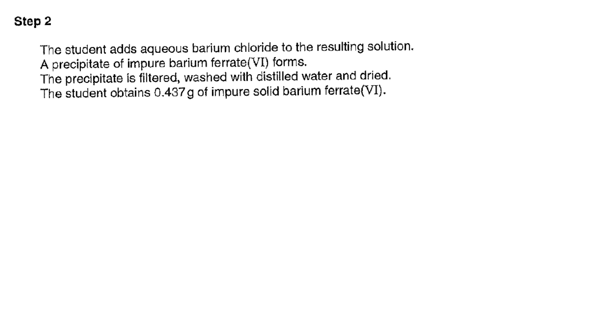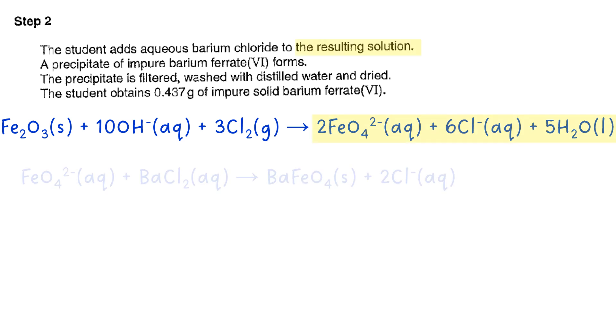So now we can go on to step two and think about what's happening here. So putting our equation down from before, the resulting solution is obviously the products. Now why have I ignored 6Cl- and 5H2O? Well the H2O ends up in the solvent and the 6Cl- is already there. So it's not actually being made in this reaction. It's just kind of floating around in the background. So what I'm going to do is just put in 2Cl- which comes from the barium chloride, the BaCl2. So the impure barium ferrate is your BaFeO4.